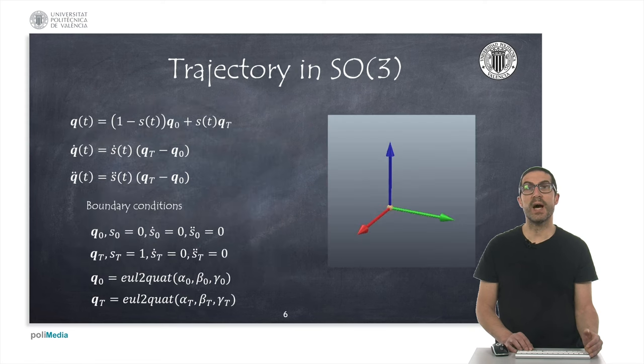Now, we will see how to interpolate between two different orientations. In this case, we will use the representation of quaternions, since this will allow us to obtain a smooth transition between two different orientations with a simple linear interpolation. Therefore, in the first place, here, q denotes the orientation expressed in quaternions.